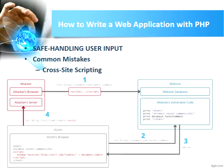The first security problem is cross-site scripting (XSS). Cross-site scripting is a type of computer security vulnerability typically found in web applications. It enables attackers to inject client-side scripts, such as JavaScript, into web pages.